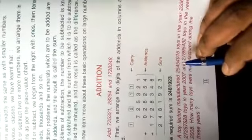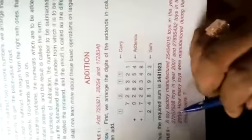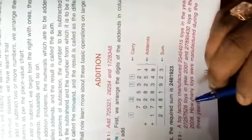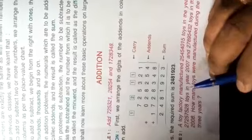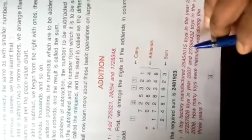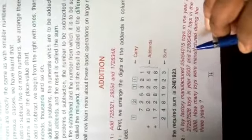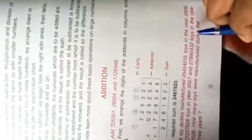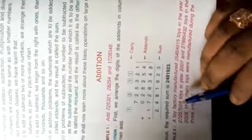Another question is given. A factory manufactures 2,54,05,415 toys in the year 2006, 2,72,57,528 toys in the year 2007, and 2,78,95,432 toys in the year 2008. How many toys were manufactured during the three years?